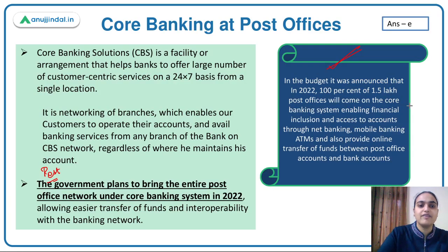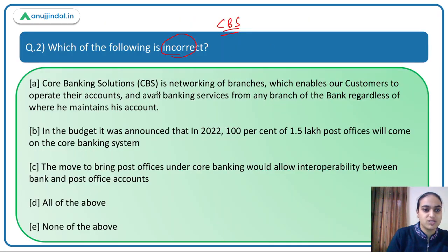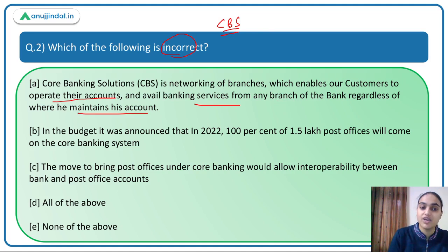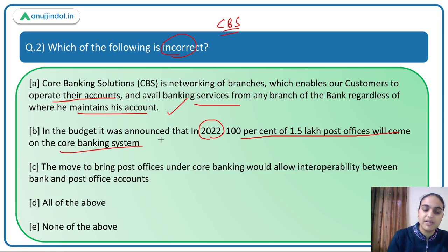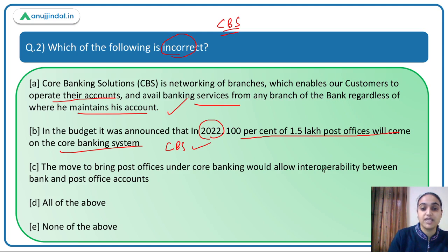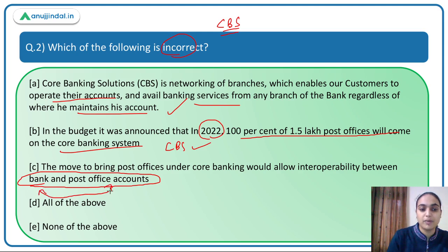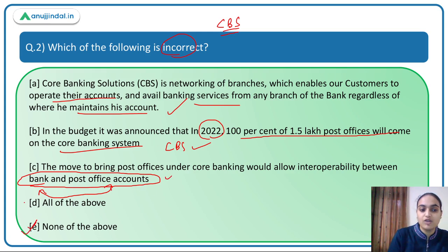Coming back to the question, we have to identify the incorrect statement. Statement one says CBS is a network of branches which enables customers to operate their accounts and avail banking services from any branch regardless of where they maintain their account — this is correct. Statement two says in the budget it was announced that in 2022, 100% of 1.5 lakh post offices will come under CBS — also correct. Statement three says the move to bring post offices under CBS will allow interoperability between bank and post office accounts — also correct. So the answer is option E: none of the above is incorrect.